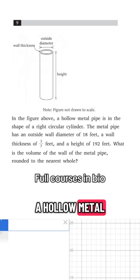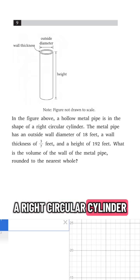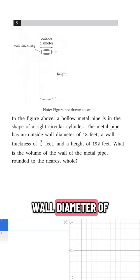We're told, in the figure above, a hollow metal pipe is in the shape of a right circular cylinder. The metal pipe has an outside wall diameter of 18 feet, a wall thickness of 3/7 feet, and a height of 192 feet. What is the volume of the wall of the metal pipe rounded to the nearest whole?